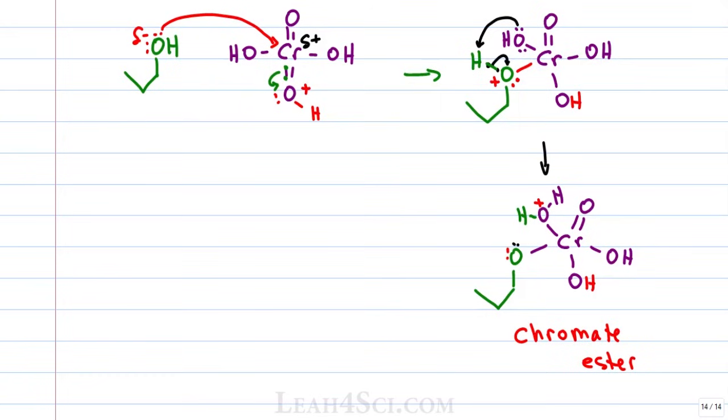An ester has a carbon double bound to oxygen and single bound to an OR group. Here we have a chromium double bound to oxygen and the alcohol is our OR group. The next step will be to break away the oxygen from the chromium and this is allowed to happen because we have at least one alpha hydrogen. The alpha carbon is the one that is holding the oxygen, the hydrogens attached to that are the alpha hydrogens.